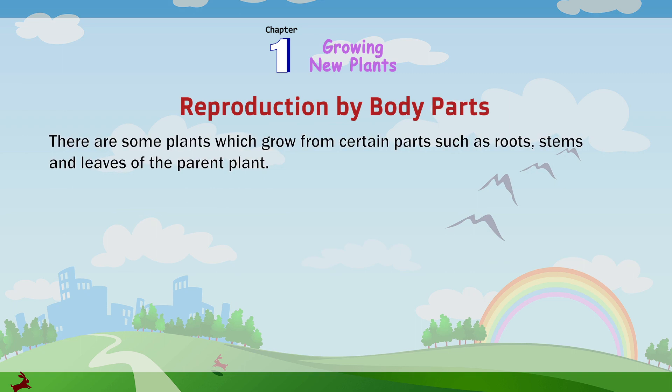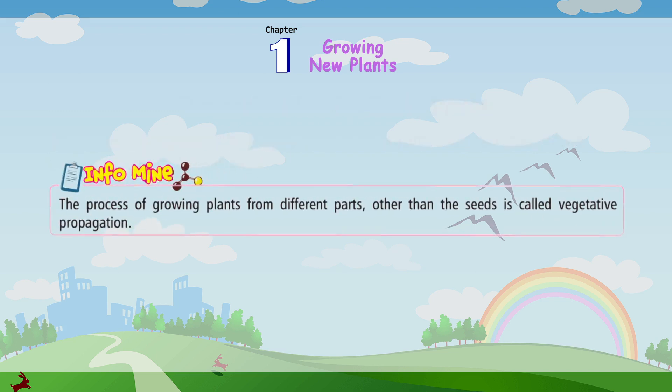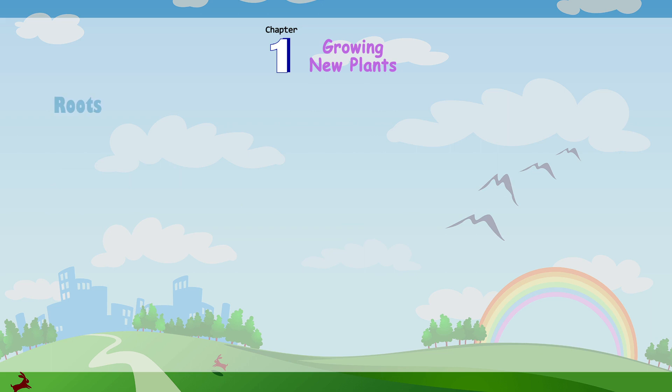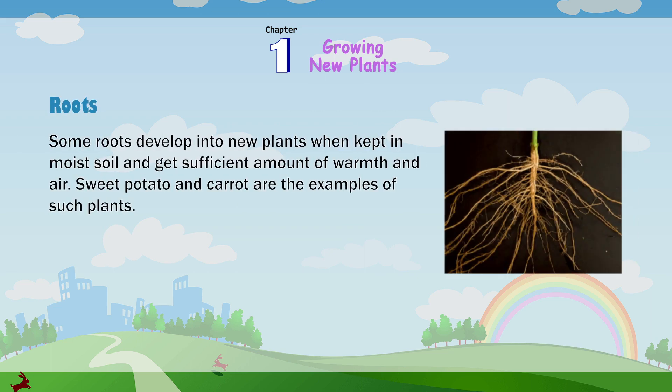Reproduction by body parts. There are some plants which grow from certain parts such as roots, stems and leaves of the parent plant. The process of growing plants from different parts other than the seeds is called vegetative propagation. Roots: some roots develop into new plants when kept in moist soil and get sufficient amount of warmth and air. Sweet potato and carrot are examples of such plants.